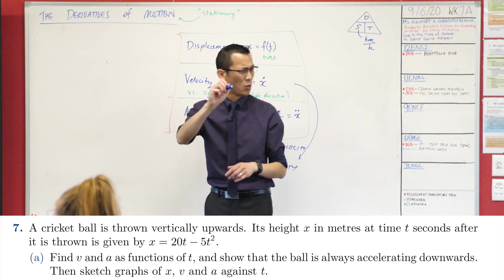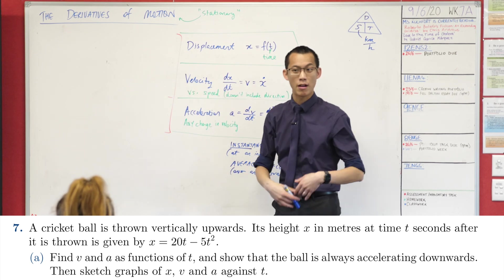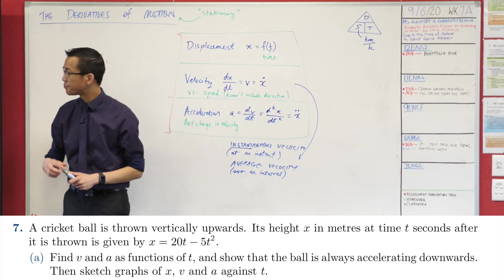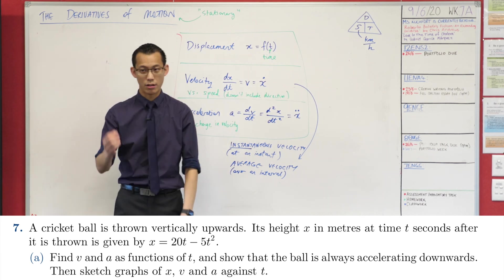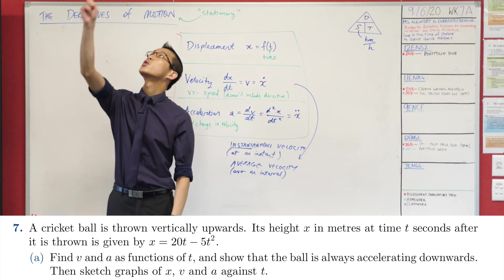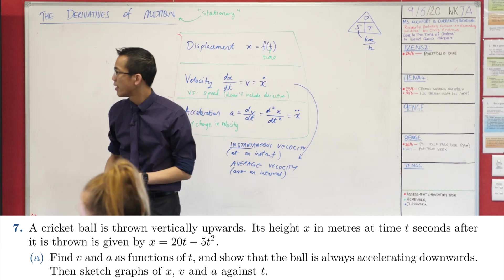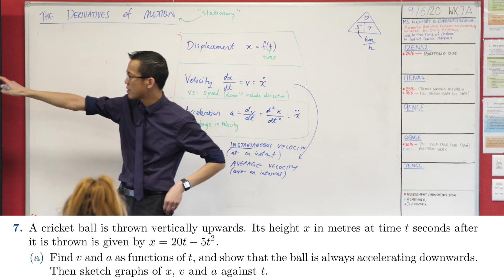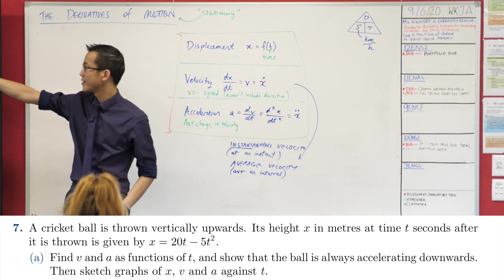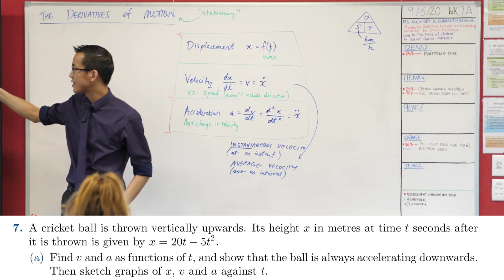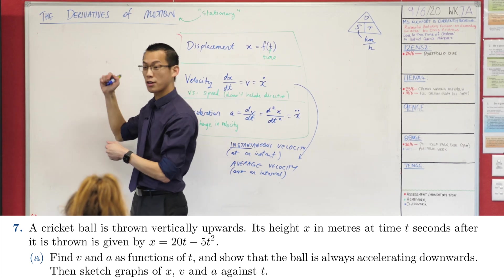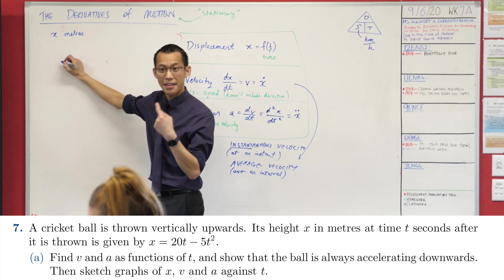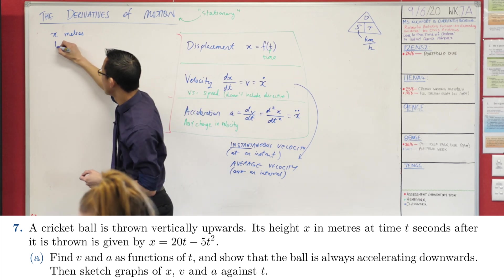Okay, so if you want you can write down underneath all of your table and stuff like that, maybe you can write example. We're having a look at a cricket ball that gets thrown vertically upwards. They give you a model of the height x in meters at time t seconds. That stuff's really important, so I'm going to write it down right now that x is in meters and then t is in seconds.